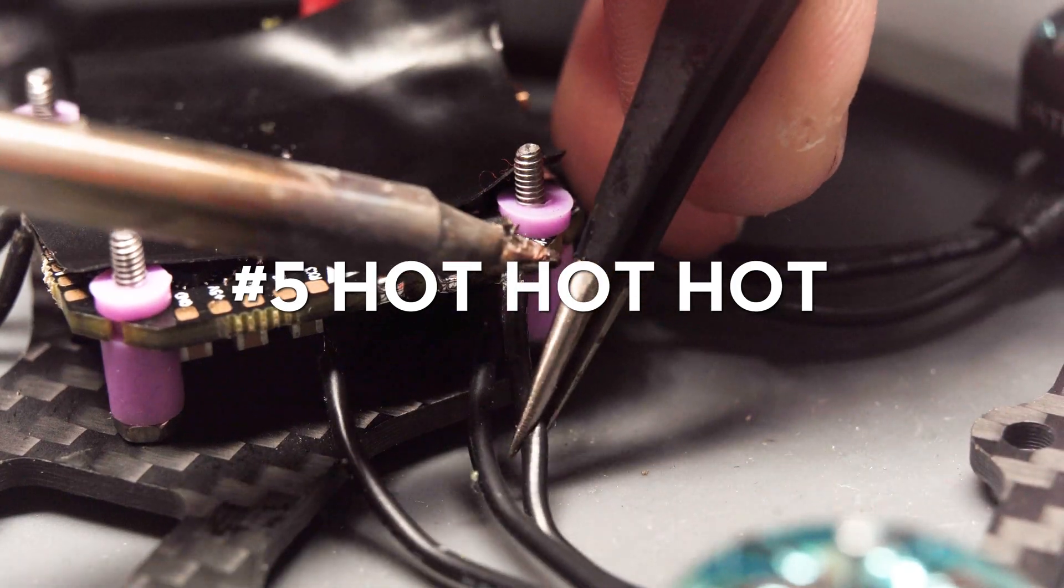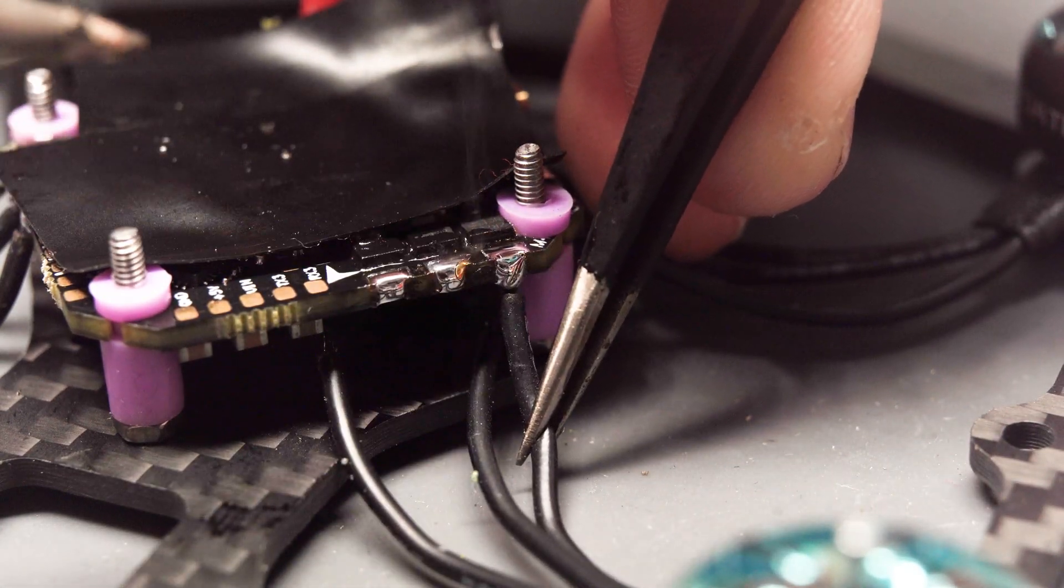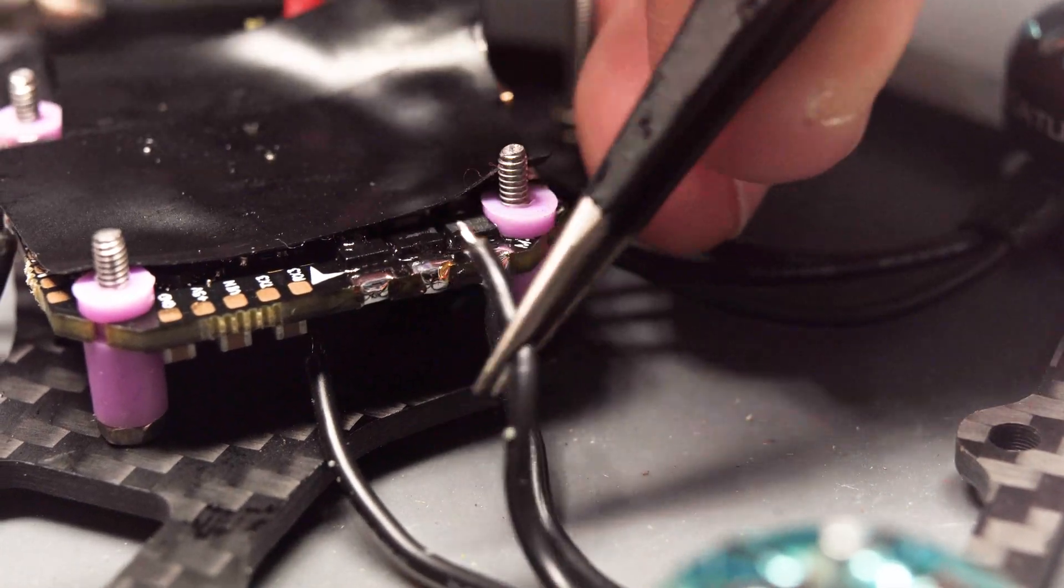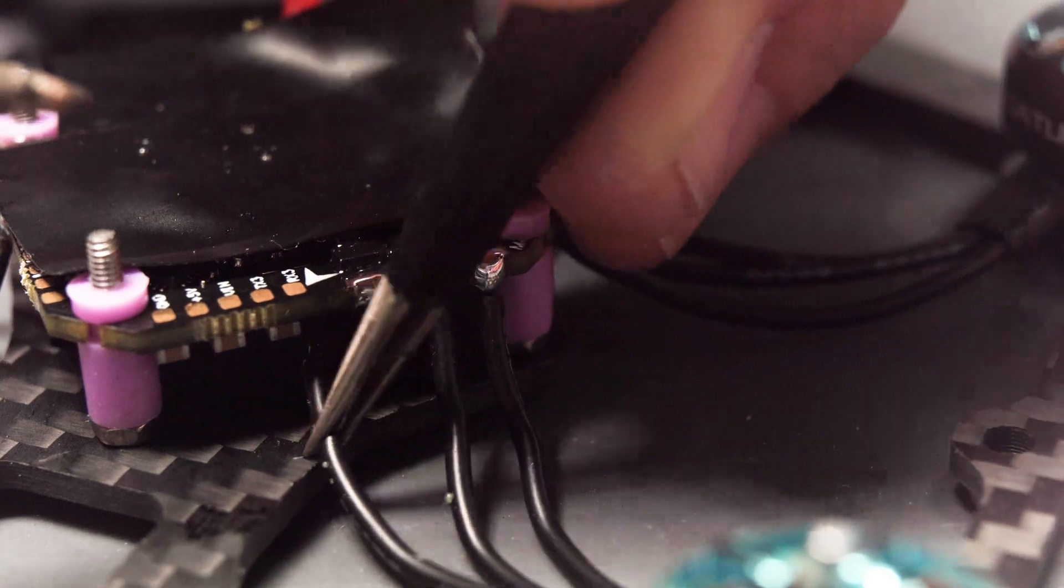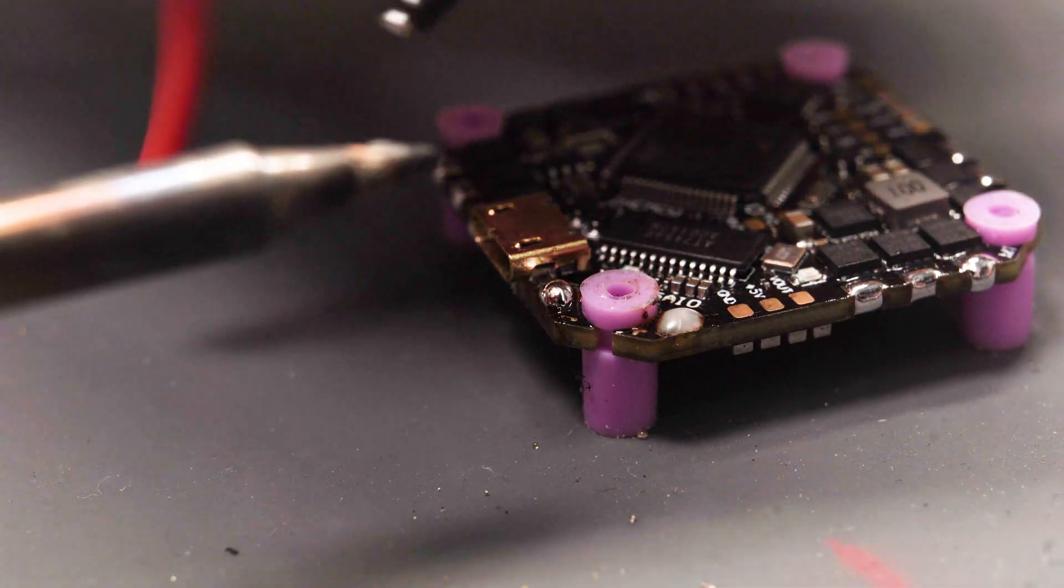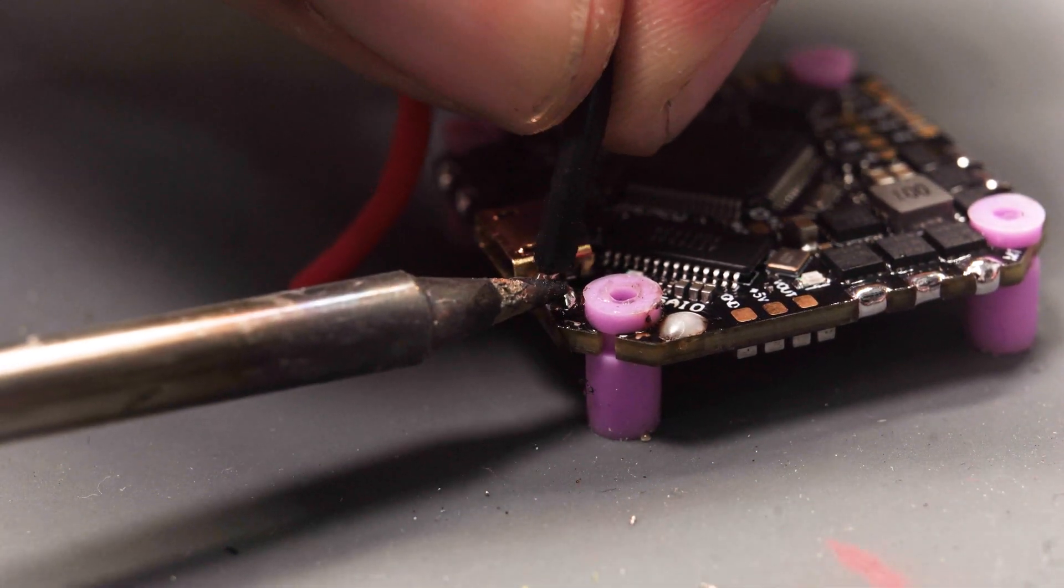Tip number five, hot and fast. You want to be real hot and real quick. You can see that in these solder joints I'm only on the pad for just a few seconds. If you sit there with a colder temperature for longer it's going to heat up the components on the board and it could cause one of them to come off.